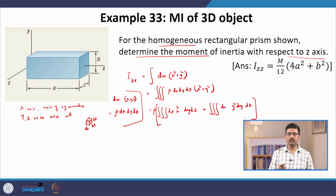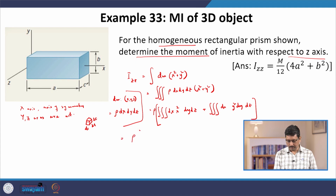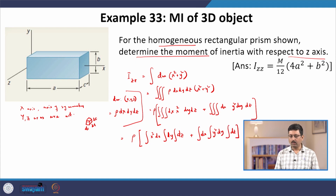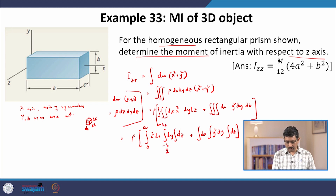Since this is a rectangular object, x, y, z can vary independently of each other, so we can factorize the integral. We get rho times: the first term is the integral of x squared dx times the integral of dy times the integral of dz, and the second term is the integral of dx times the integral of y squared dy times the integral of dz. From the figure, x goes from 0 to a, y varies from minus b/2 to b/2, and z varies from 0 to c.